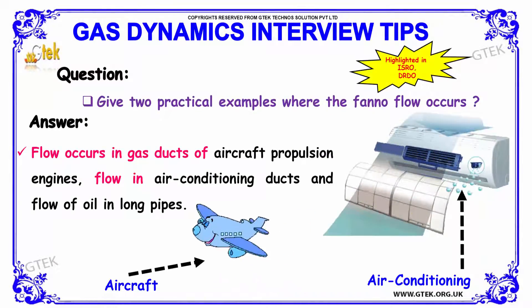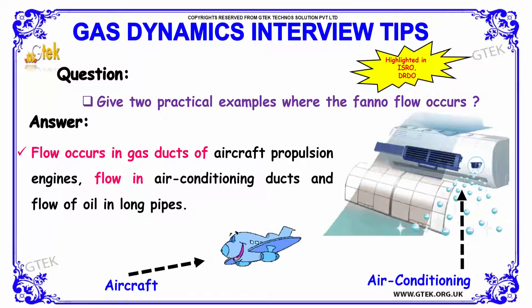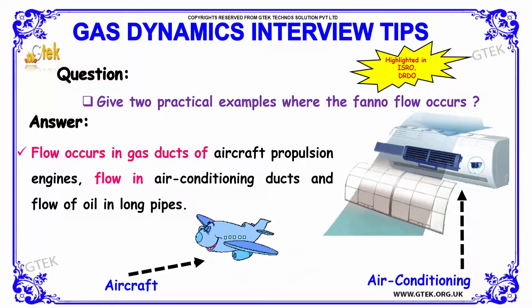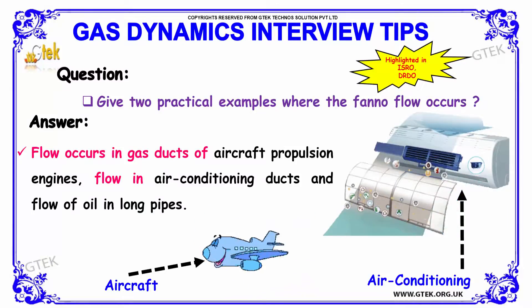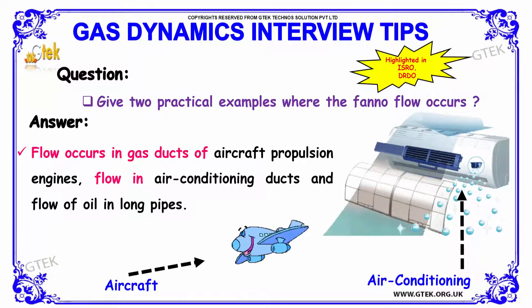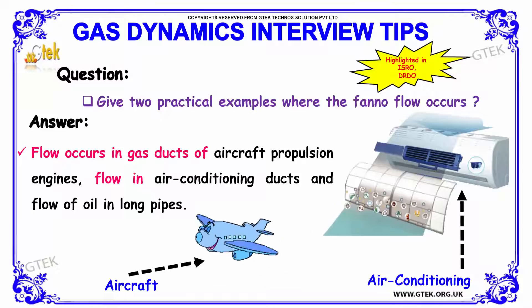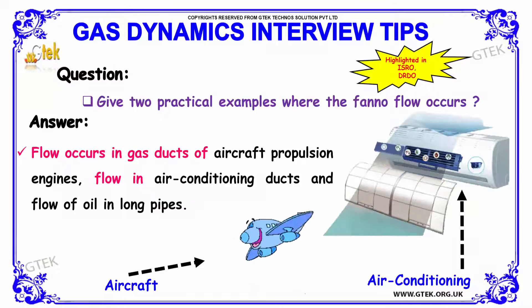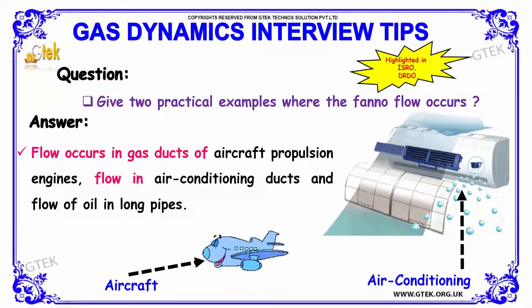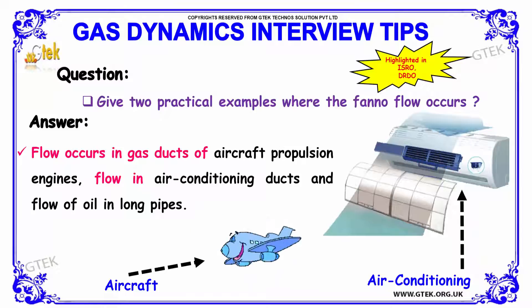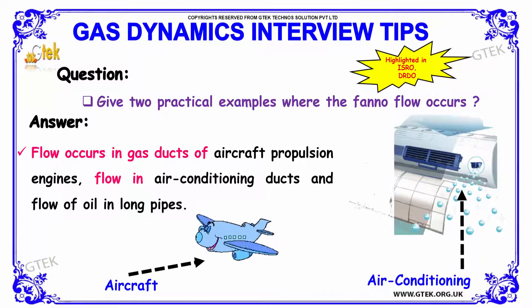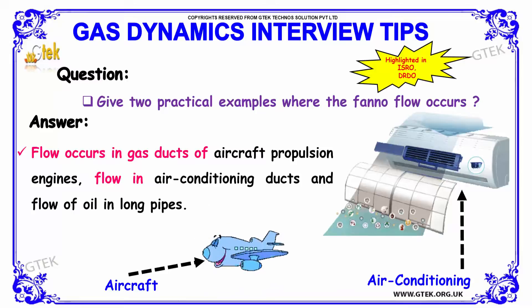Next question: define two practical examples where Fanno flow occurs. Fanno flow occurs in aircraft propulsion engines, in air conditioning ducts, and also in the flow of oil in long pipes. Here we have the depiction of aircraft and air conditioning. These are considered to be the two practical examples where Fanno flow occurs.